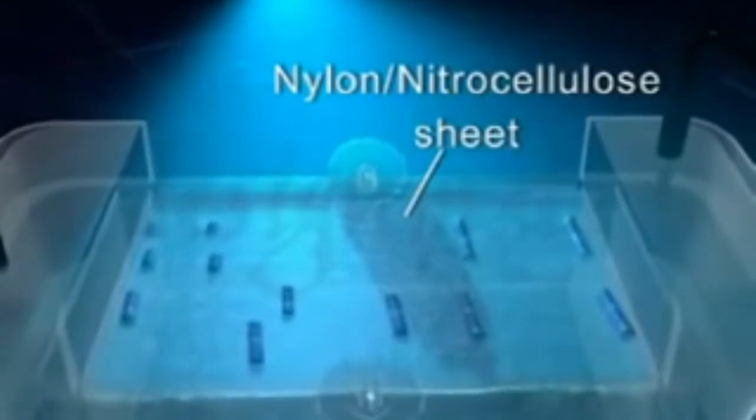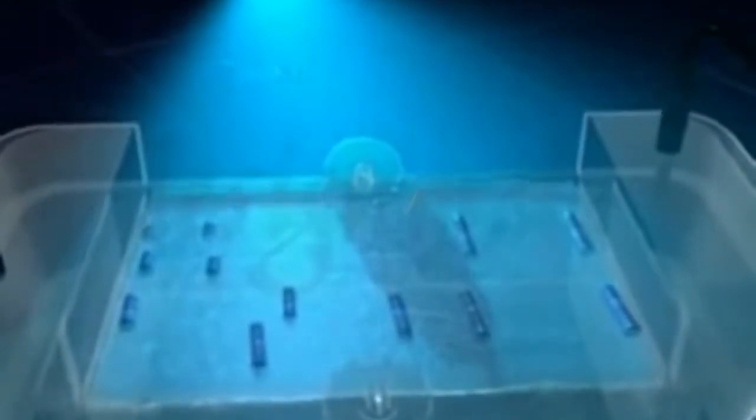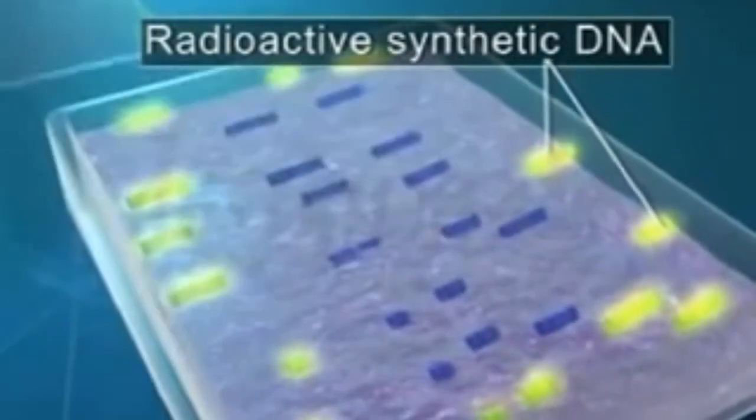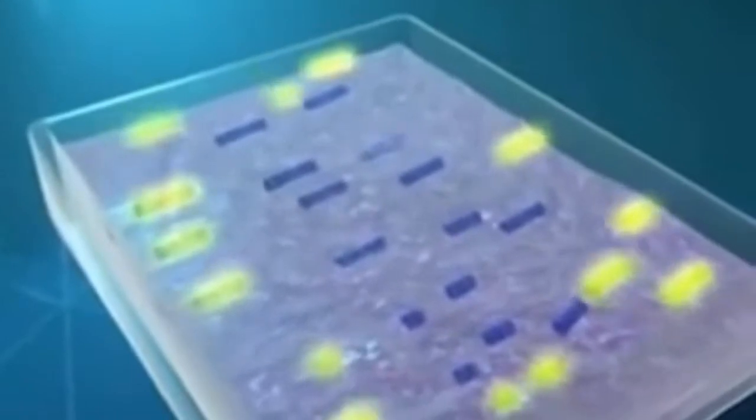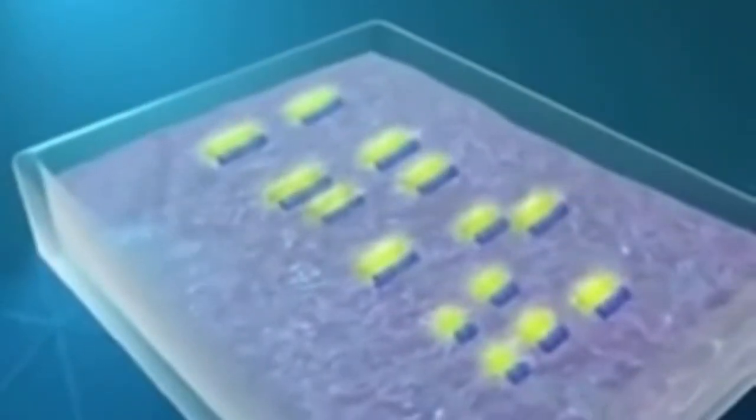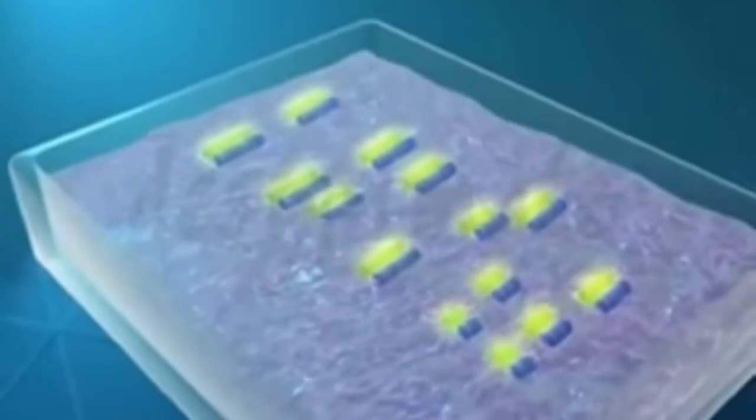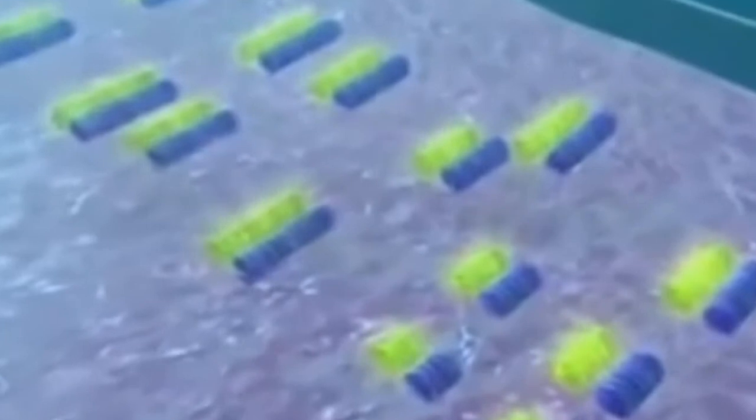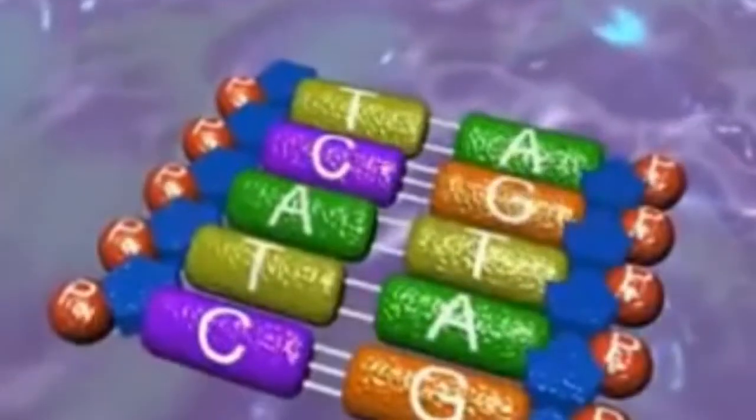These DNA fragments are transferred to a nylon or nitrocellulose sheet placed over the gel. This sheet is immersed in a bath and markers of radioactive synthetic DNA segments with known sequences are added. The probes target a specific nucleotide sequence which are complementary to VNTR sequence and hybridizes them.